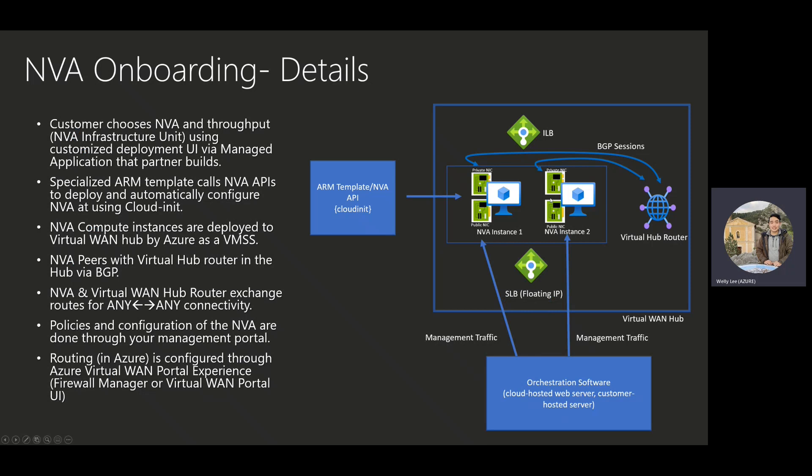Diving a little bit deeper: the customer chooses the NVA vendor they want and the throughput they want, which is determined by NVA infrastructure units. All of this deployment happens from a customized deployment UI template called a managed application. This managed application then calls a specialized Azure Resource Manager template, which calls NVA APIs to deploy and configure the NVA using cloud-init. These NVAs are deployed into the virtual WAN hub as a VM scale set, and then the NVA peers with the virtual WAN hub router via BGP, exchanging routes for any-to-any connectivity. You manage the NVA through the partner orchestrator or management portal, and routing in Azure is configured through Azure Virtual WAN with a few simple clicks.